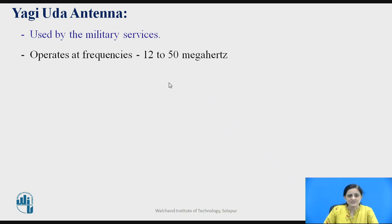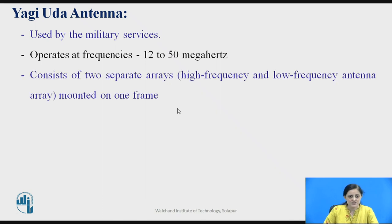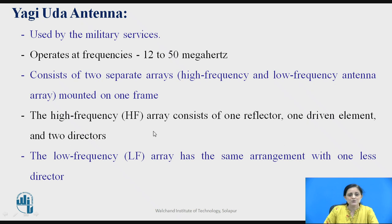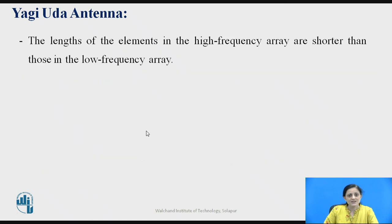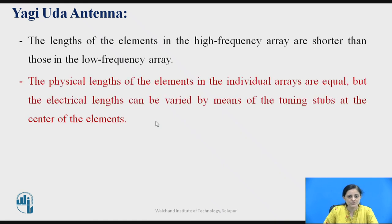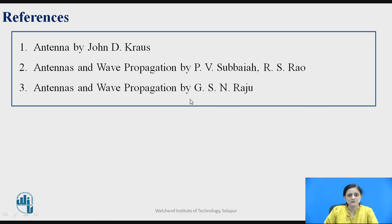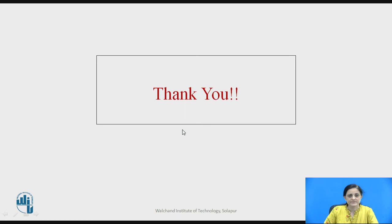The Yagi-Uda antenna used by military services operates at frequencies of 12 to 50 MHz. It consists of two separate arrays — a high frequency and a low frequency array — mounted on one frame. The high frequency array consists of one reflector, one driven element, and two directors, while the low frequency array has the same arrangement with one less director. The electrical lengths can be varied by means of tuning stubs at the center of the elements, and the array can be rotated in any desired direction by a remotely controlled electrically driven motor. These are the references used for today's session. Thank you.